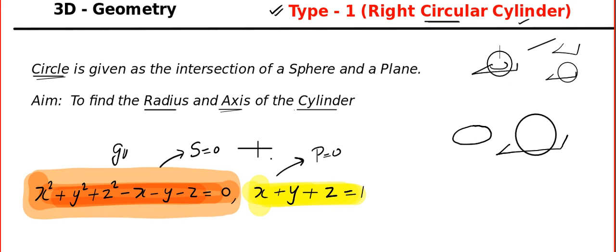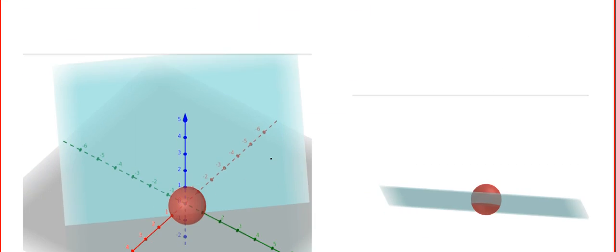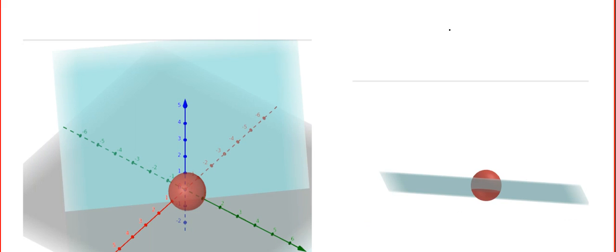I will show you some graphics. Can you see the blue color plane intersecting with the sphere? A circle is formed at the intersection. A sphere and a plane intersect and a circle is formed.